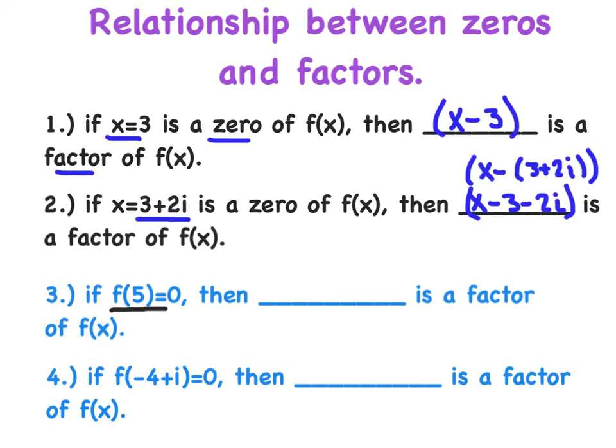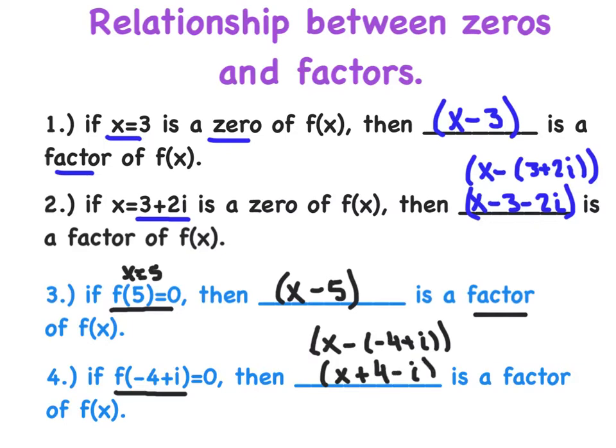If f of five equals zero, then really what I'm saying is x equals five is one of my zeros. Therefore, the quantity x minus five is a factor of f of x. Now, here's the trickier one. If f of the quantity negative four plus i, or the complex number negative four plus i equals zero, then what we're really saying is x minus the complex number negative four plus i is a factor. Or, in other words, x plus four minus i is a factor.